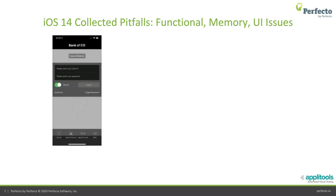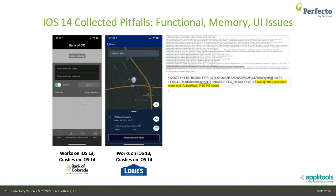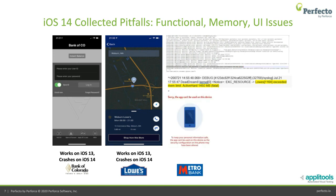From a collection of applications run through iOS 14 in the Perfecto cloud, we saw the Bank of Colorado native app crash on iOS 14 beta. The Laws application works fine on iOS 13 but crashes on iOS 14 when attempting to log in, due to a memory leak — we actually captured the exact line in the logs causing the crash. Metro Bank also works fine on iOS 13 but crashes on iOS 14, showing different memory consumption behavior in the new platform.